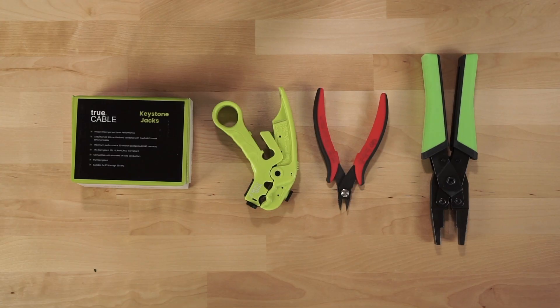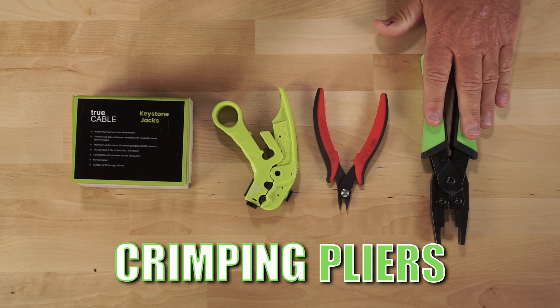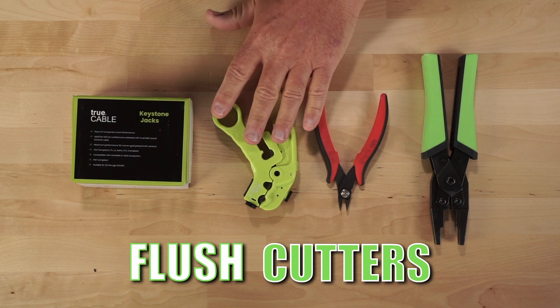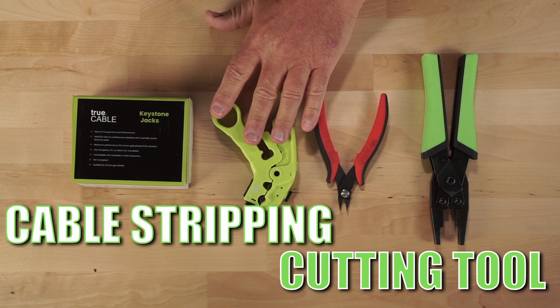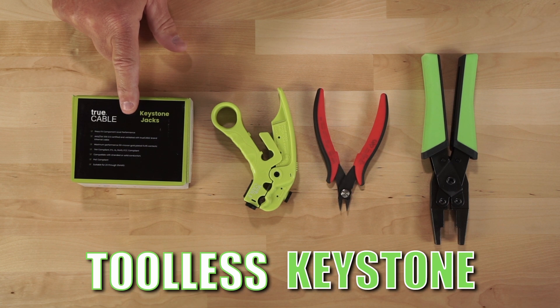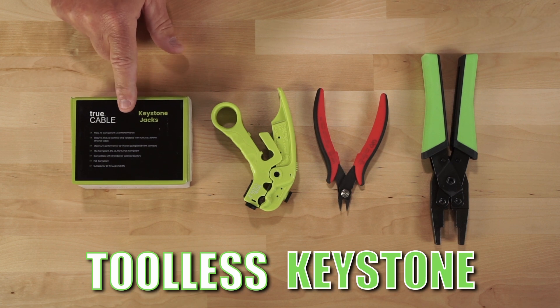For this project I'm going to be using the following set of tools. I have a pair of parallel crimping pliers by TruCable, a pair of flush cutters, the cable stripper and cable cutter also from TruCable, and the TruCable shielded keystone jacks and these are toolless.